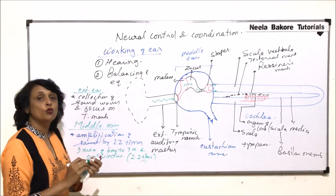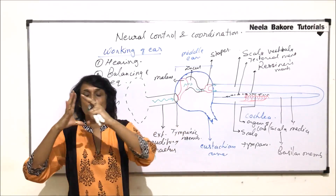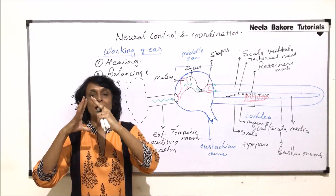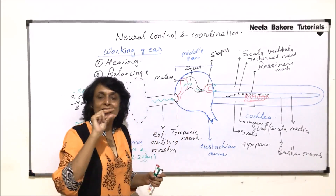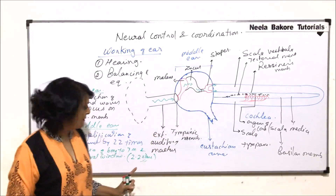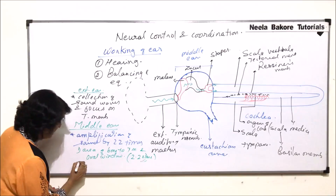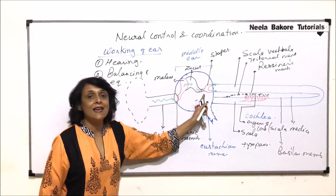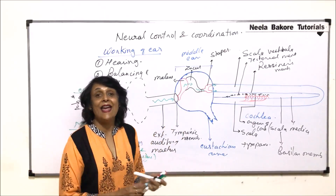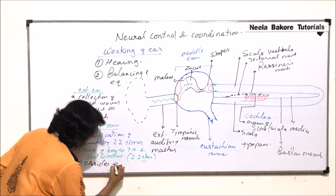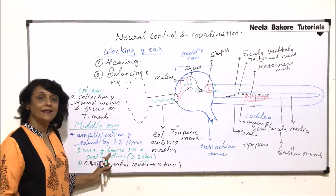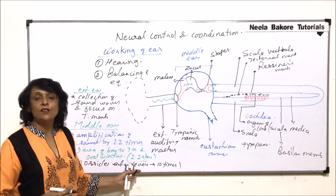The tympanic membrane is bigger, so sound waves collected by this large surface are transmitted through a narrow stapes to the smaller oval window — amplifying 2.2 times. The second factor is the lever-like arrangement of the ear ossicles; the ossicles act as levers and amplify the sound 10 times. Multiplying 2.2 by 10 gives the 22 times total amplification.